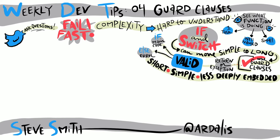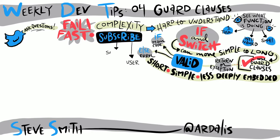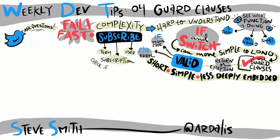Imagine for a moment that you have a method that performs a subscribe operation, and it takes in three objects: a user, a subscription, and a term, or how long that subscription should last. Naturally, you want to ensure that these objects are not null before you start working with them. One way to structure the method would be to first check if the user is not null, then inside of this if statement, check if the subscription is not null, and inside that statement, check if the term is not null. Now, in this statement, we're nested three deep. We are in what is sometimes referred to as the happy path for the function.